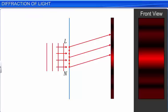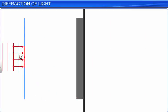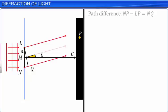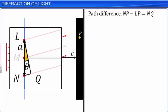Consider an arbitrary point P on the screen. Let us examine the conditions for point P to be a diffraction maxima or minima. Let M be the midpoint of the slit, and a straight line passing through M be perpendicular to the plane of the slit, meeting the screen at C. Let the line joining M and P make an angle theta with the normal MC. Consider light rays from two point sources L and N separated by a distance A reaching point P. The path difference, NP minus LP, is equal to NQ. From triangle LNQ, NQ equals A sin theta. For small angles of theta, sin theta is approximately equal to theta, so the path difference equals A theta.